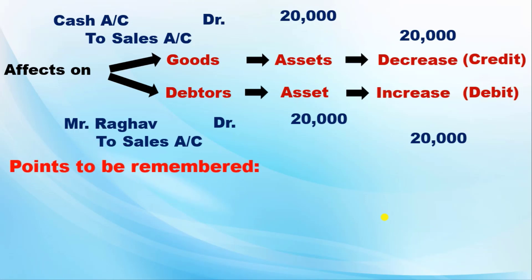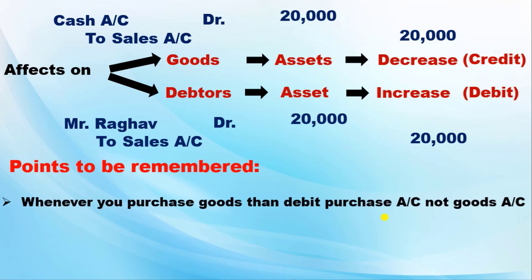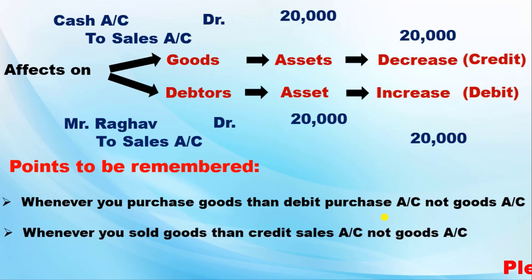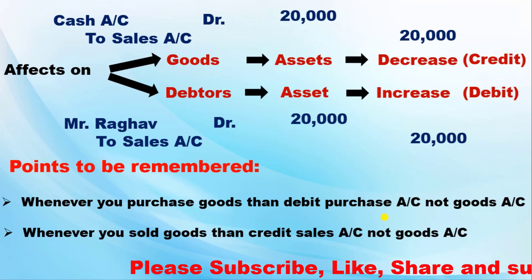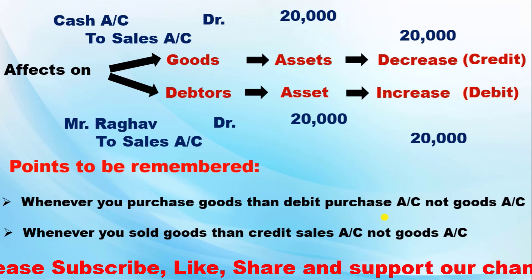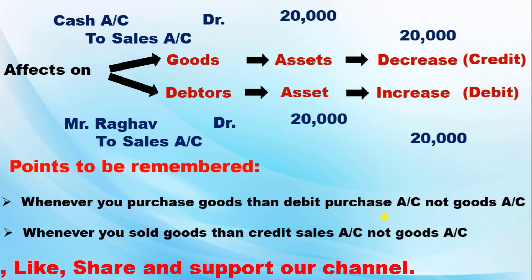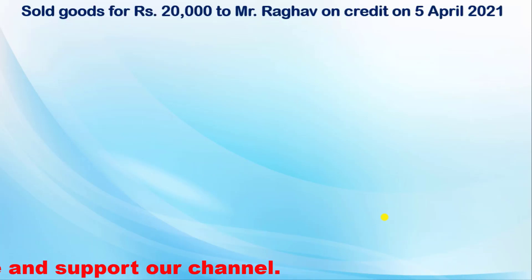An important point: when you purchase goods, whether in cash or credit, you always debit the purchase account — not the goods account. Similarly, at the time of sale, you credit the sales account.